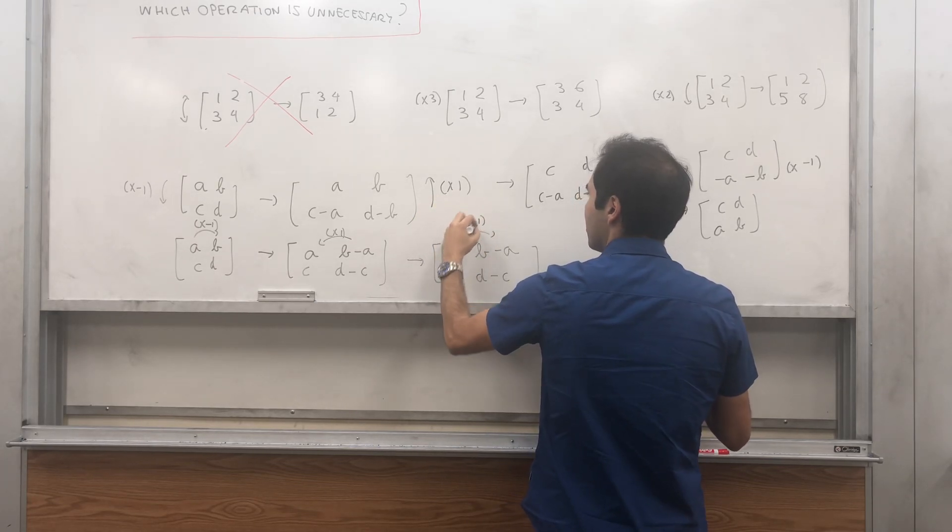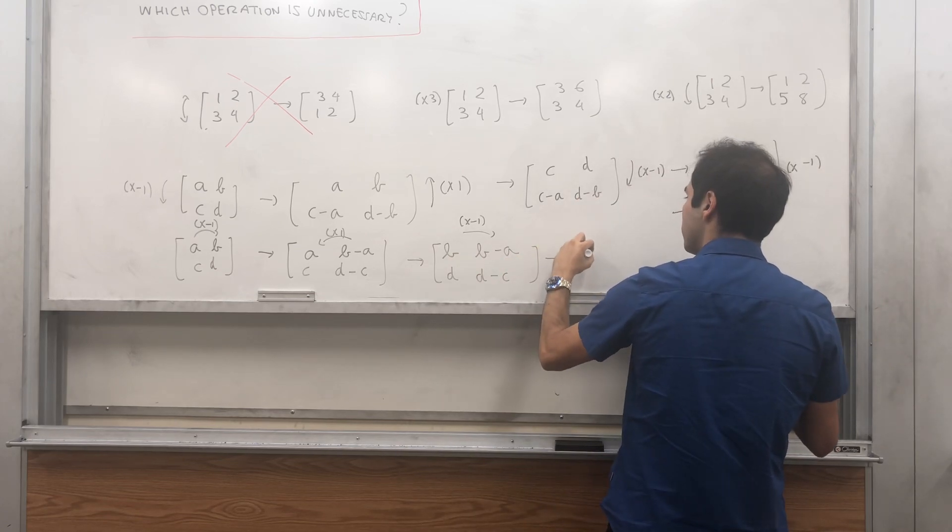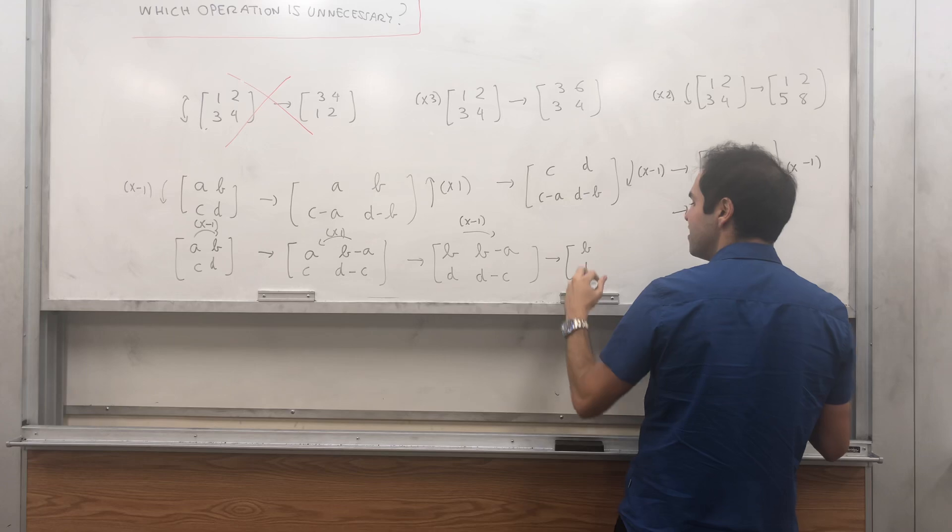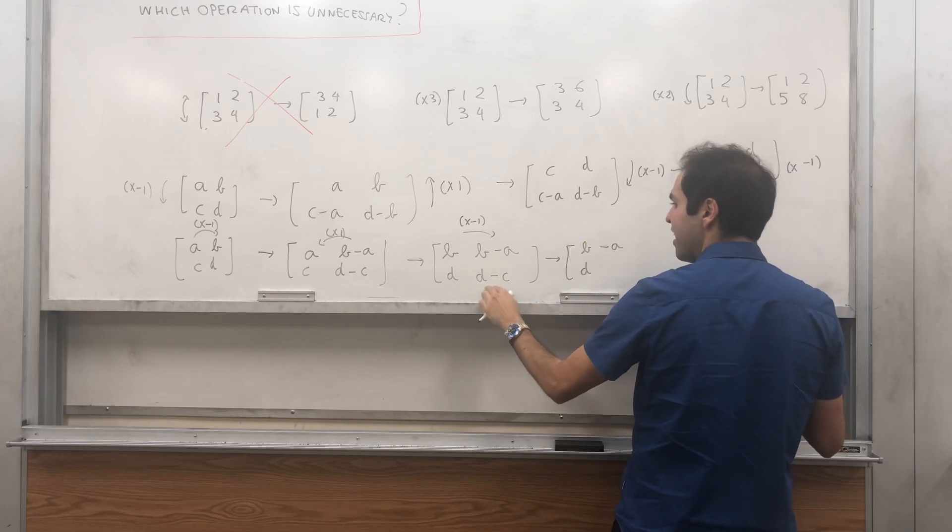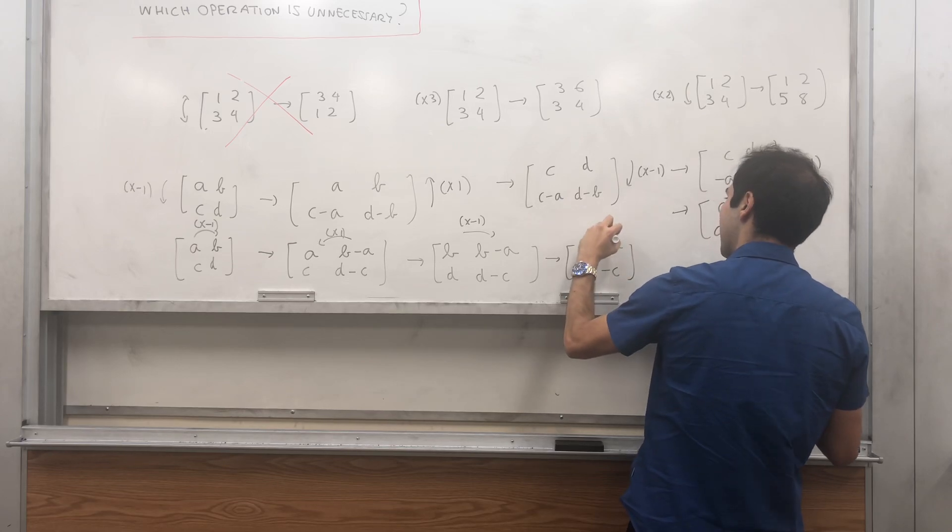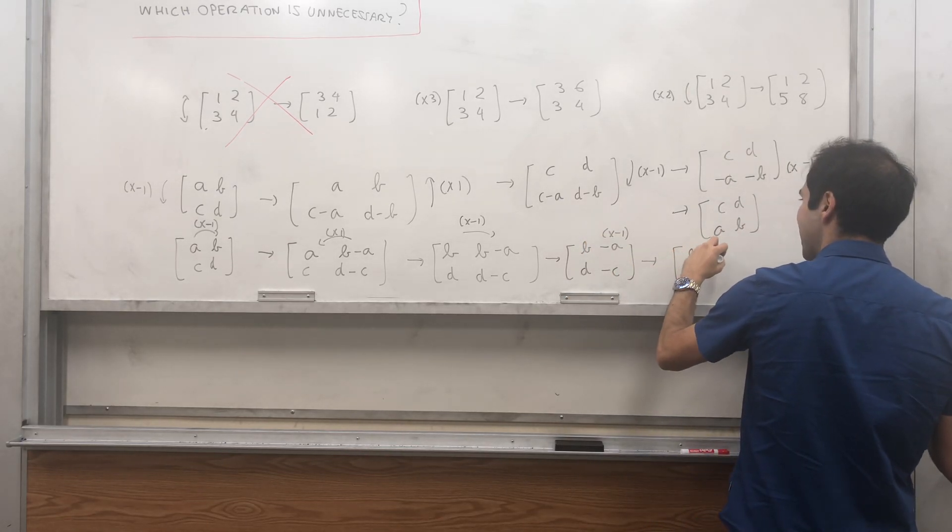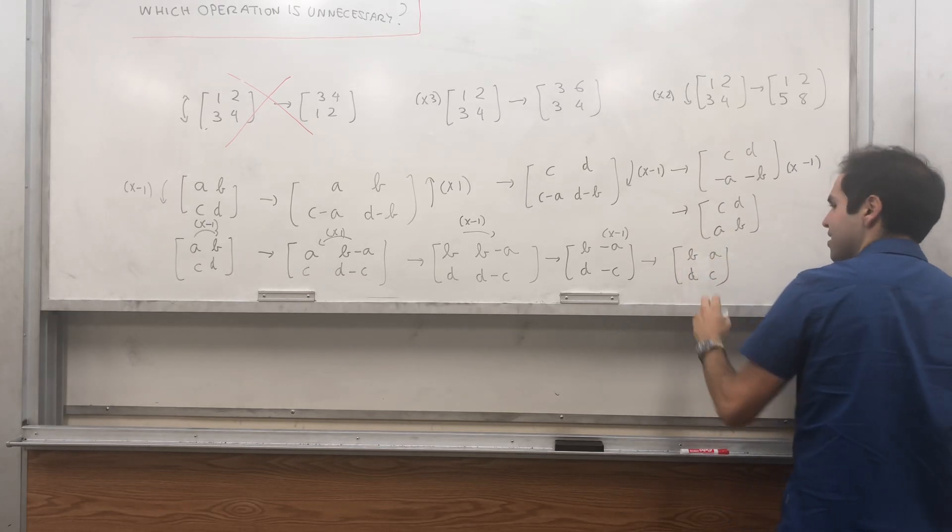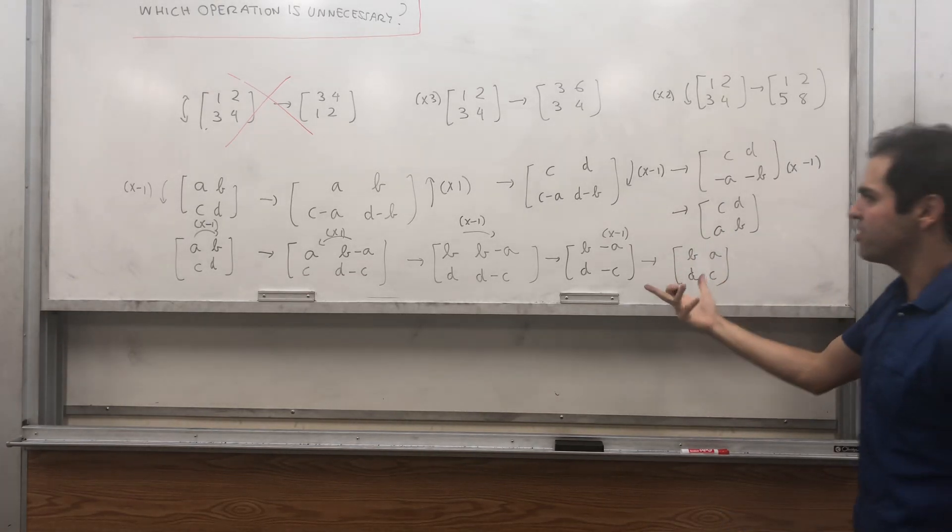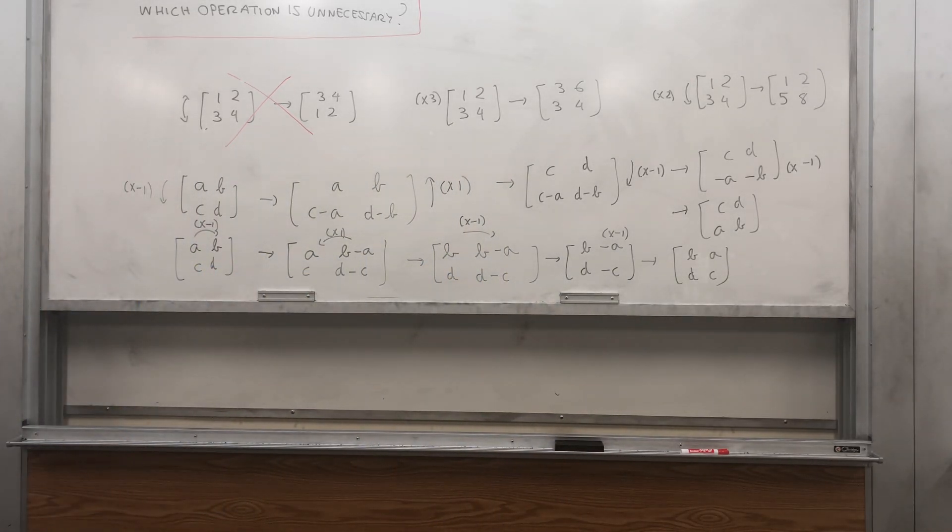And then, just as before, you subtract this from this, so you get B, still B and D, but then B minus A minus B, which is minus A, D minus C minus D, which is minus C, and then multiply this by minus one, and you get BADC, which is the same thing as swapping the two columns of the matrix.